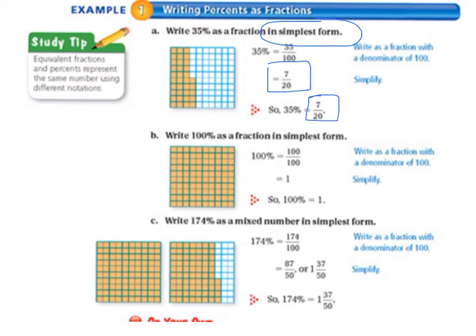So 35% equals 7 twentieths, meaning they are equivalent. Letter B: write 100% as a fraction in simplest form. 100% equals 100 over 100, and when we simplify that, it equals 1. So 100% equals 1.